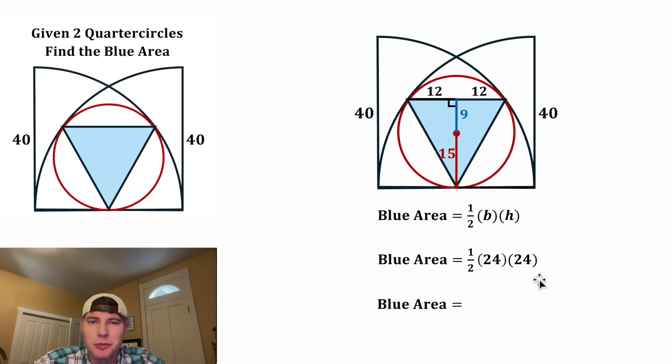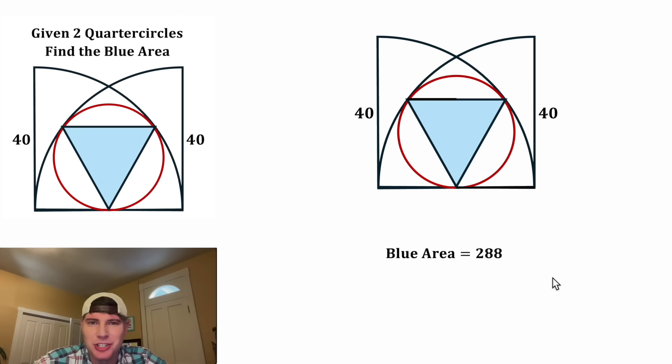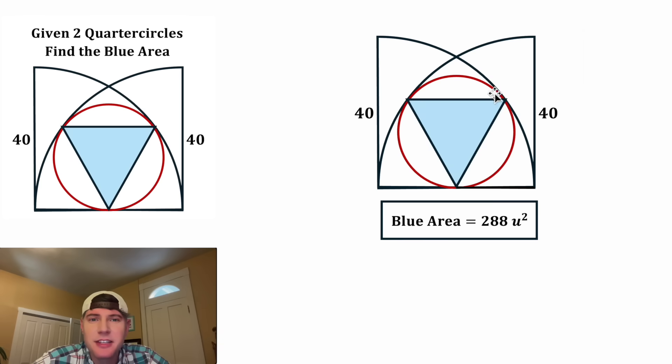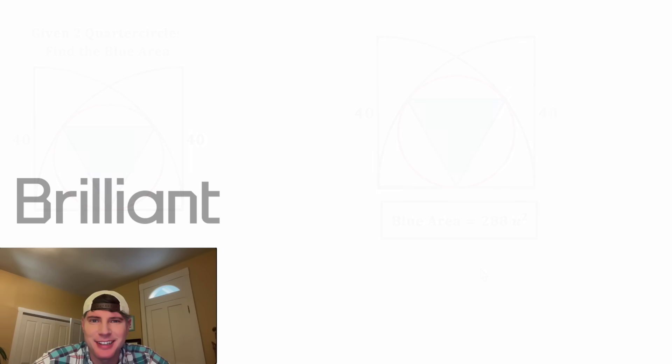And one half times 24 times 24 is equal to 288. And that is the answer to our question. Let's give it a label of square units and put a box around it. In this given diagram, the area of the blue triangle is equal to 288 square units. How exciting.